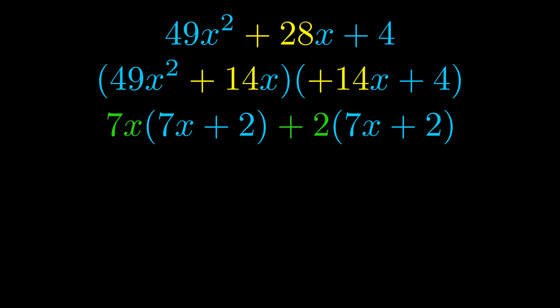Notice also how what remains inside of the parentheses is the same in both cases. The blue values are the same. Those blue values will become one of our factors and we will combine the two green values, the GCFs that we pulled out, to get the other one. And that is our fully factored equation.